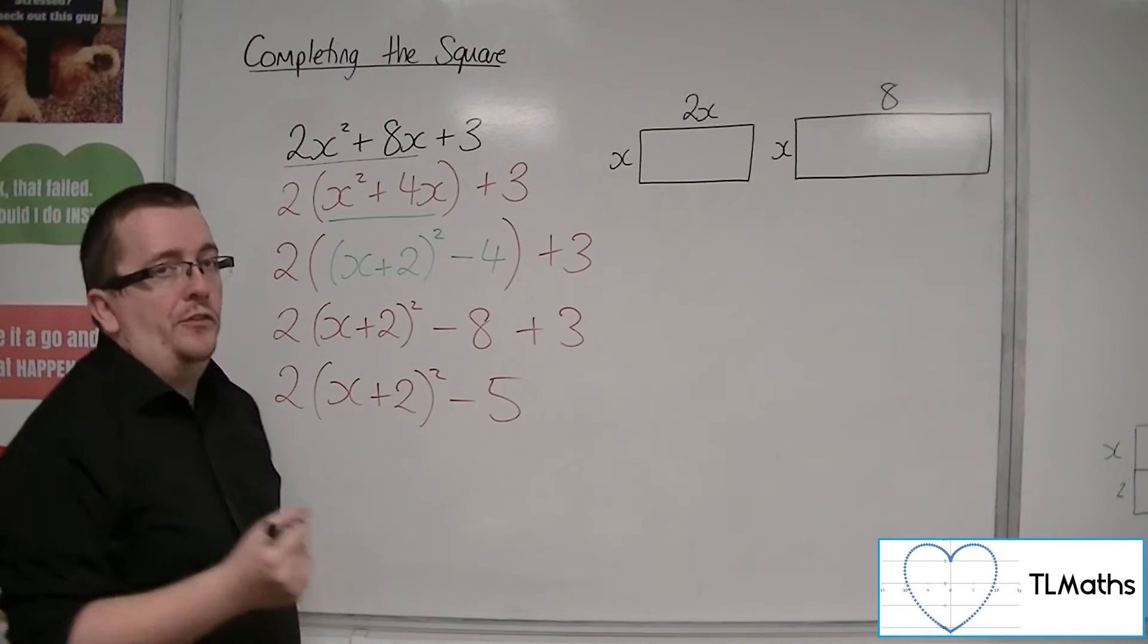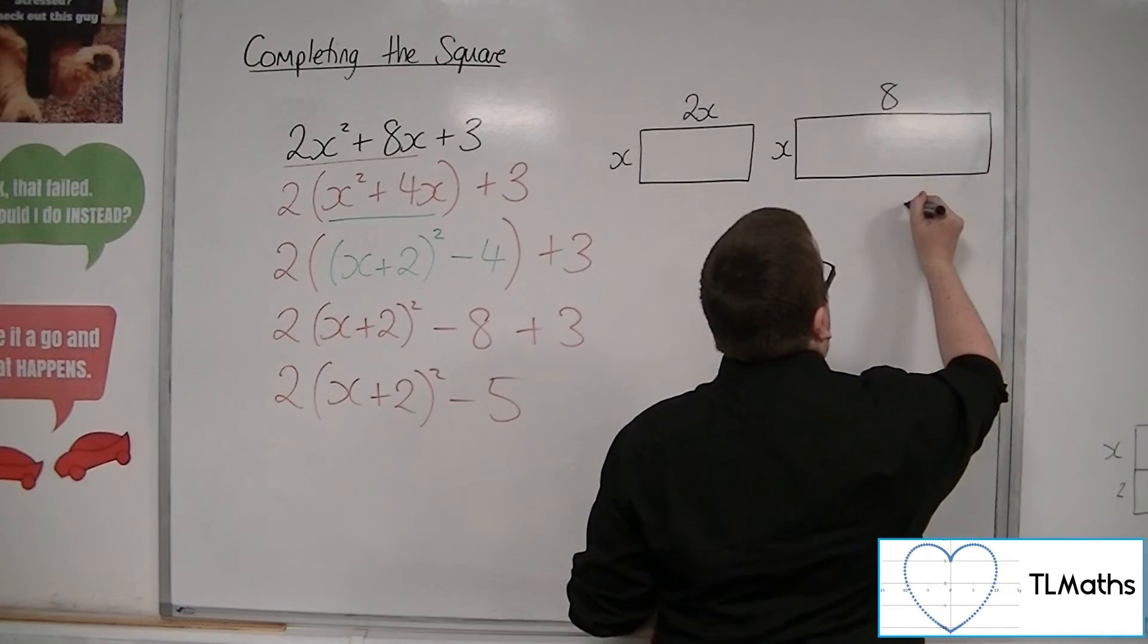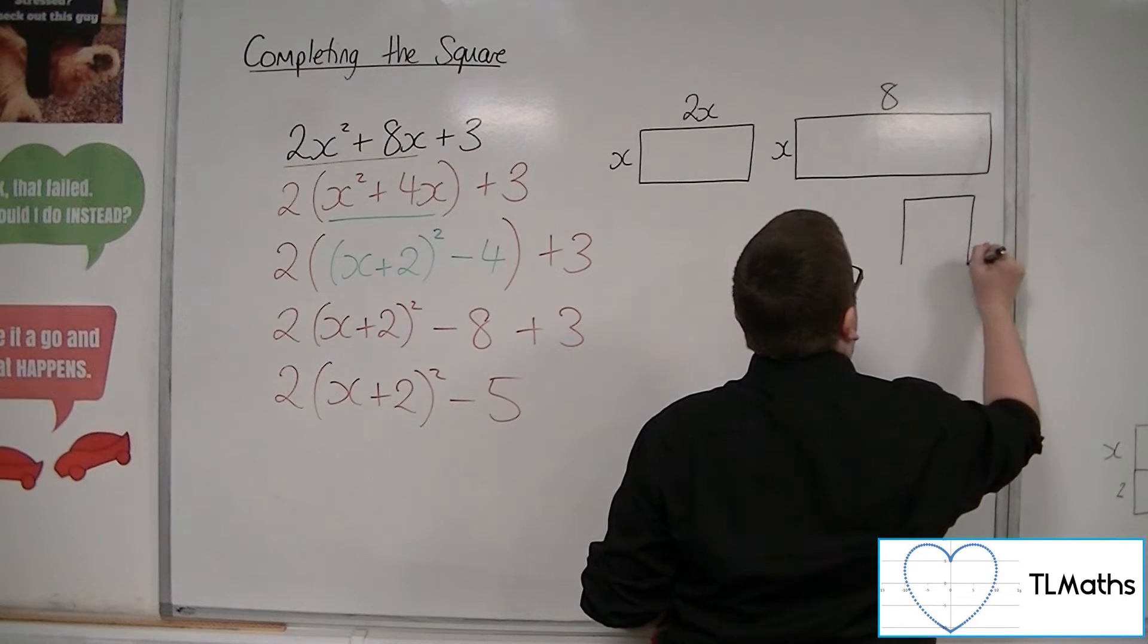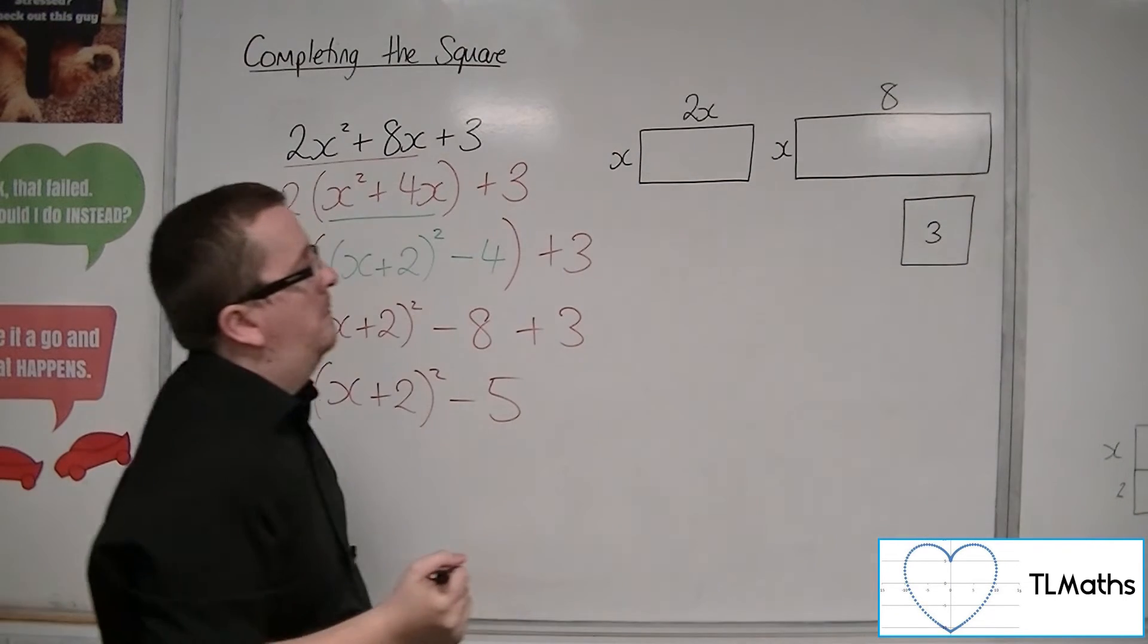And then I've got this square on the end. We don't know what its dimensions are, but I can represent it as a square. That's 3.